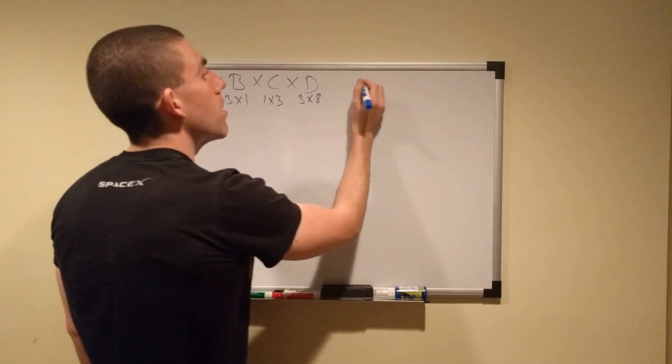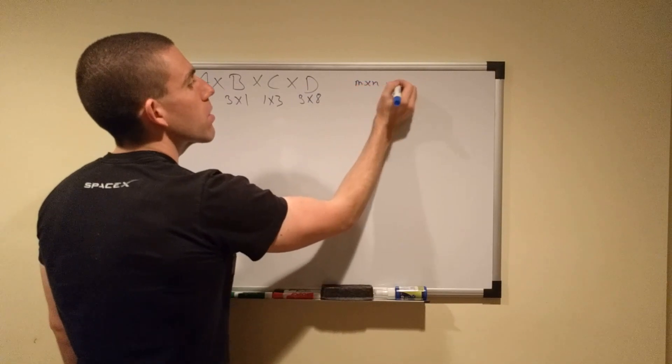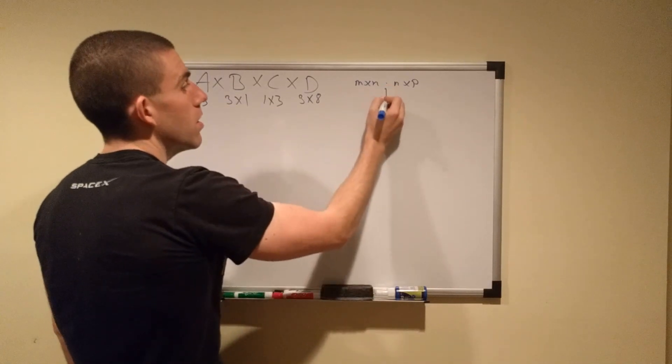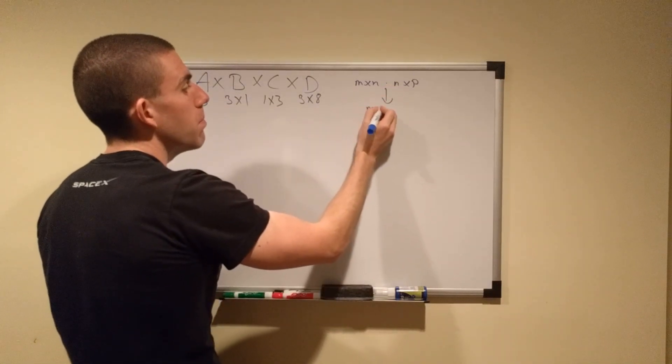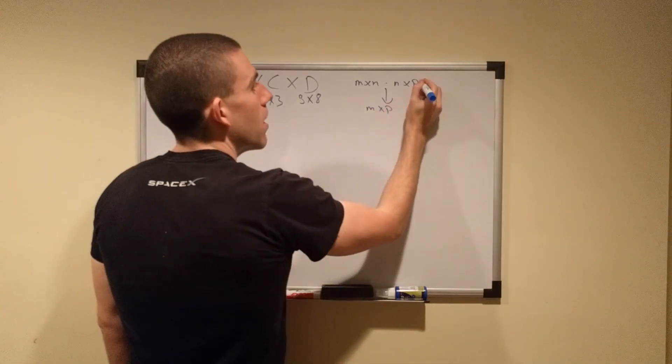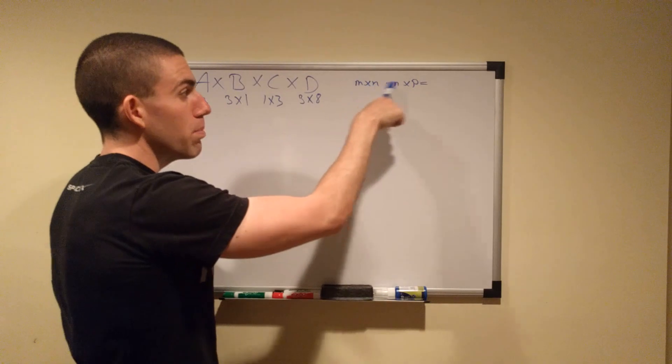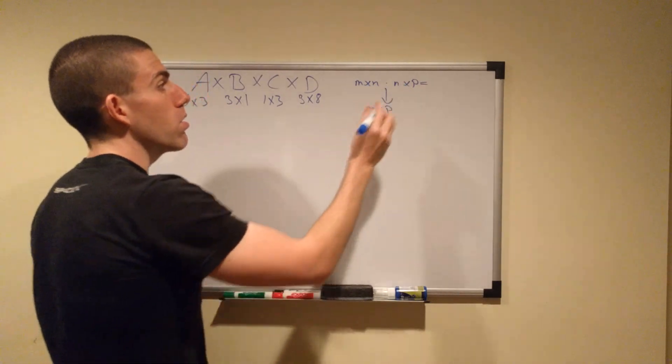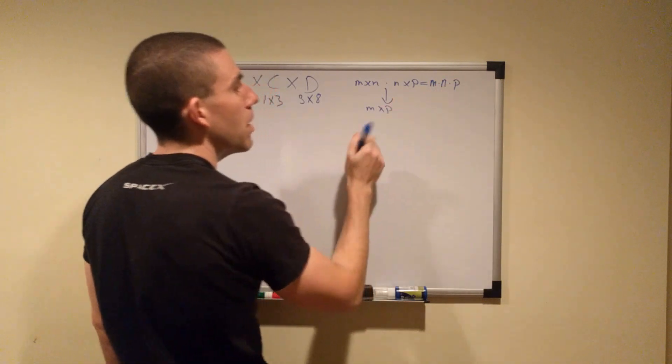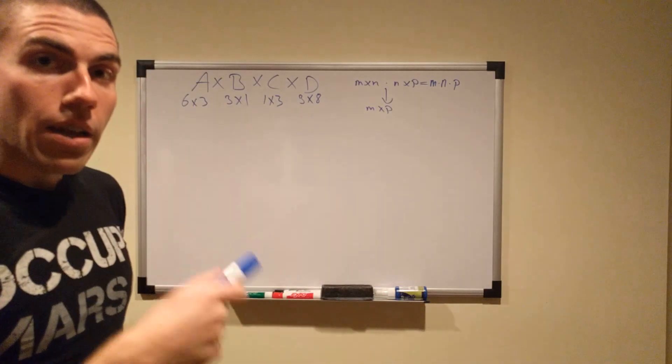Furthermore, we're going to keep this one over here. This is an important rule. Multiplying an M by N matrix by an N by P matrix yields an M by P product matrix. And in terms of the number of multiplications you have to do in order to multiply these two together, the total cost in terms of multiplications is M times N times P. That's going to come in handy later on.